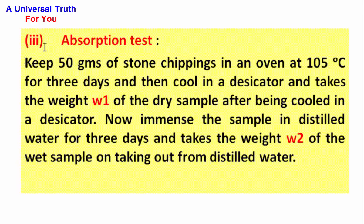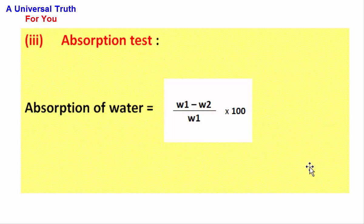Absorption test: keep 50 grams of stone chippings in an oven at 105 degrees Celsius for three days, then cool in a desiccator and take the weight W1 of the dry sample. Now immerse the sample in distilled water for three days and take the weight W2 of the wet sample on taking out from distilled water. The formula for calculating absorption of water is: absorption of water = (W1 minus W2) divided by W1, multiplied by 100.